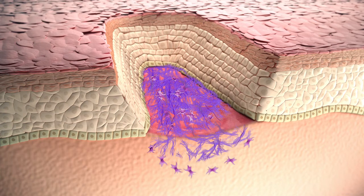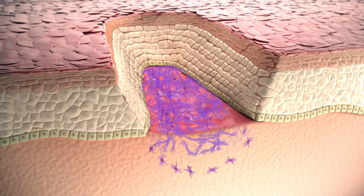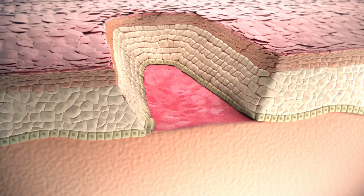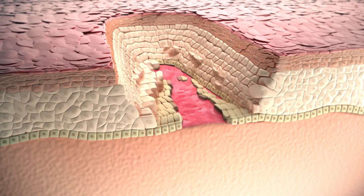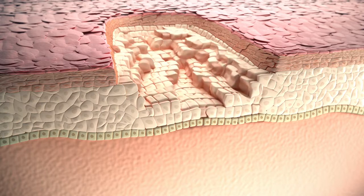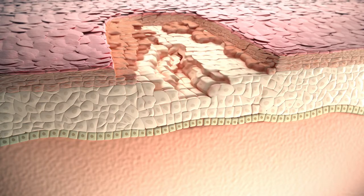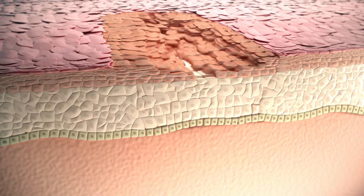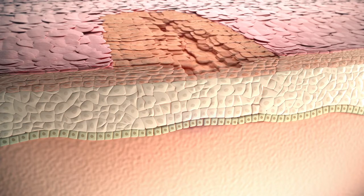In the meantime, basal keratinocytes detach from the dermoepidermal basal membrane and start a migration and proliferation process inside the wound bed. It has been demonstrated that hyaluronan enhances keratinocyte migration through the RHAMM receptor, whereas CD44 is involved in keratinocyte proliferation. Taken together, the two effects accelerate the healing process.